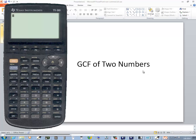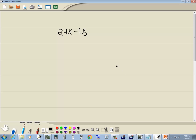Let's take a look at finding a GCF of two numbers using the TI-86 calculator. For example, I'm trying to factor this problem, and I can't see the largest number that divides into both 24 and 18. Well, I can use a calculator to find the GCF of 24 and 18.